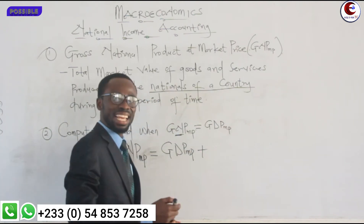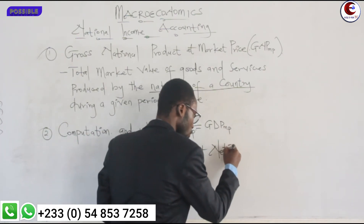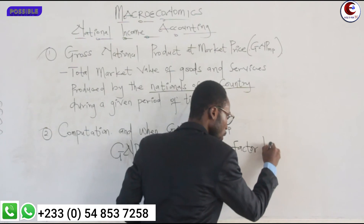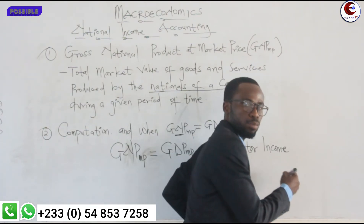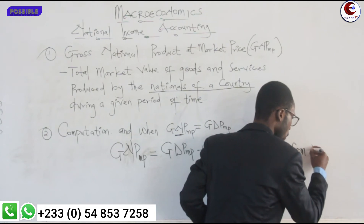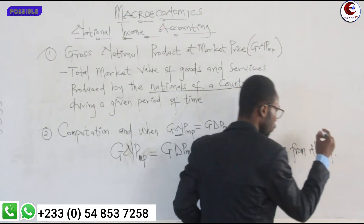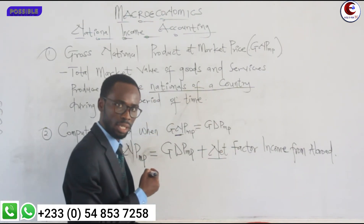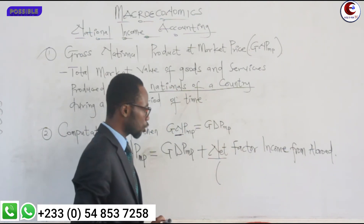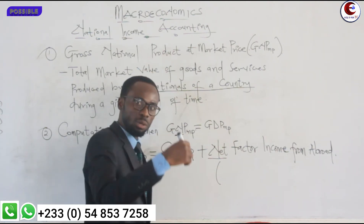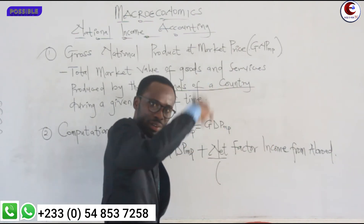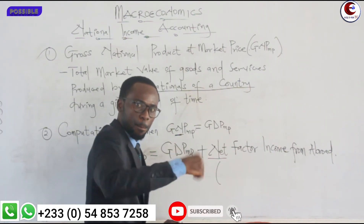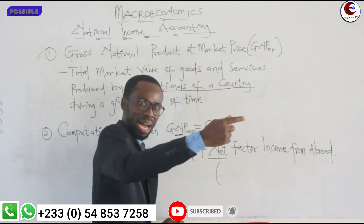So we add income. The next term is Net Factor Income from Abroad. Net Factor Income from Abroad means we take the remittance coming in from outside the country — what your citizens are bringing home — minus what the foreigners are taking back to their country.